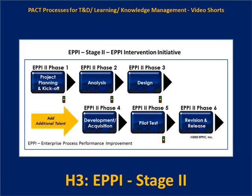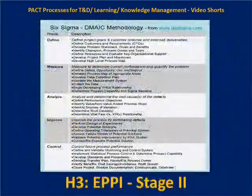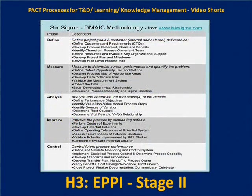It may be necessary to add additional talent when we get to Phase 4 — develop and acquire these interventions — so we may be expanding our team at this particular point. Six Sigma uses the DMAIC methodology, and we may be defaulting to an approach like this when we get to Stage 2. As always, it depends.